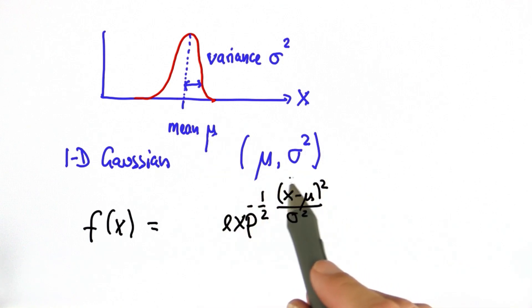Now if x equals mu, then the numerator becomes 0, and we have e to the 0, which is 1.